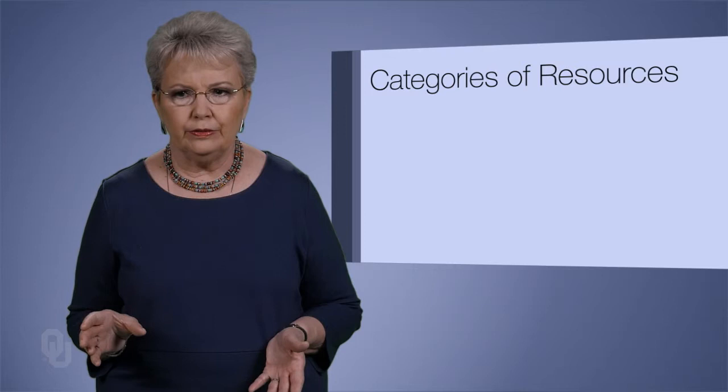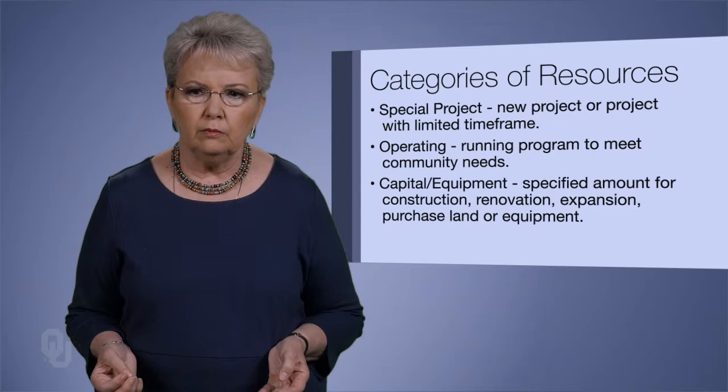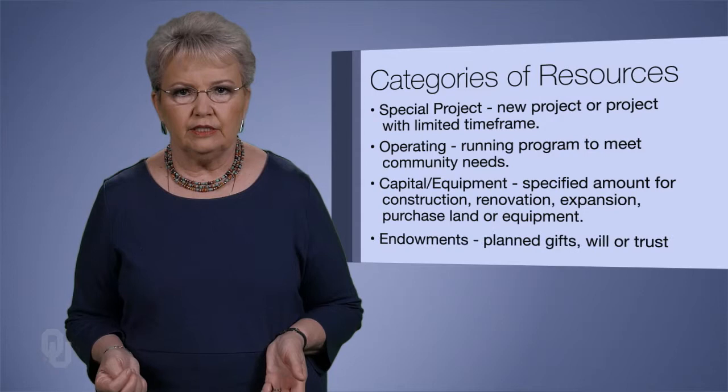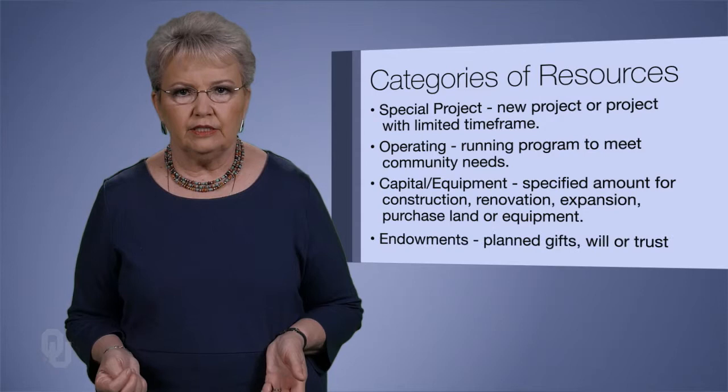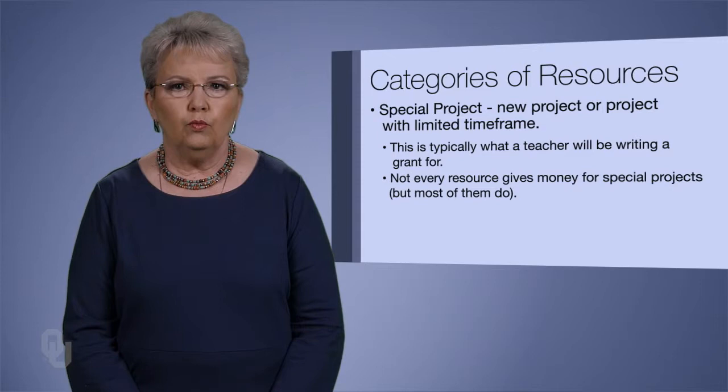There are about four types of grant proposals to write. One is called a special project. One is an operating grant. One might be a capital and equipment grant — capital meaning buildings or renovation of the building — and then the fourth one is an endowment grant. A special project grant is basically what teachers will be writing for, and not every resource gives money for special projects, but most of them do.